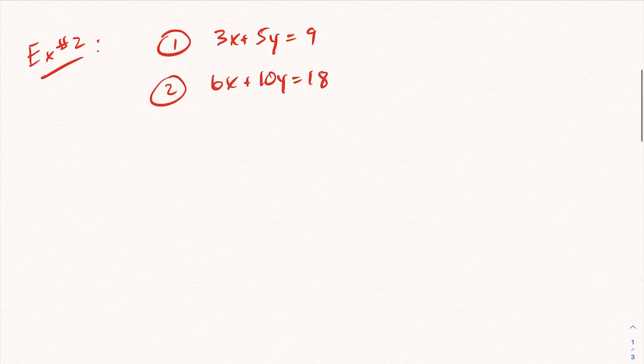Equation two here. Again, whenever you're given a system of linear equations, you want to see whether you can reduce it first, because if you put things in lowest terms, you can compare the two equations. Well, quickly for equation two, I can see I can divide across by two here. And if I divide across by two, my equation becomes 3x plus 5y is 9.